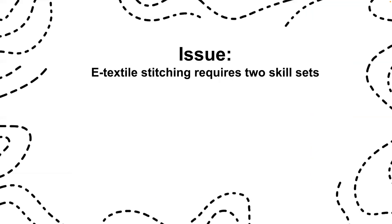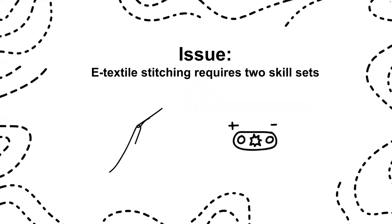When we look at hand-crafting e-textiles, hand-sewing is the most common technique used, especially in educational settings. This combines two different skill sets: the tacit skill of stitching with needle and thread — for example, knowing how to use a needle as well as different stitching techniques — and then there's the physical computing knowledge, such as how to make circuits that work.